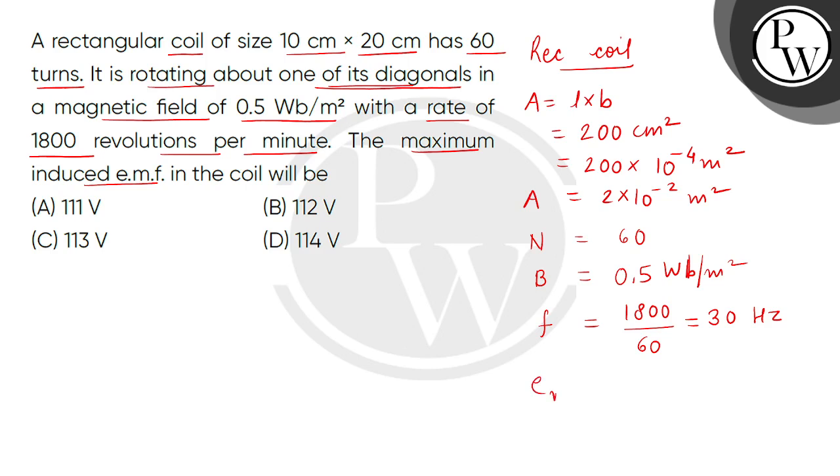Now, we have to find how much maximum induced EMF will be. So children, what can we write? EMF is the rate of change of the magnetic flux linked with the N turns. Now children, we can express the flux.